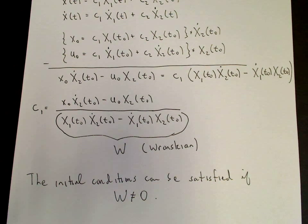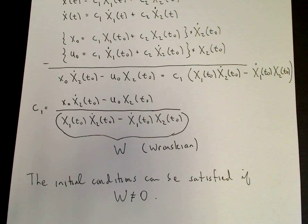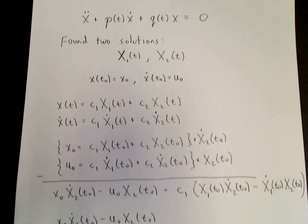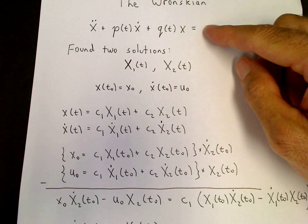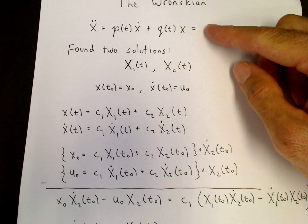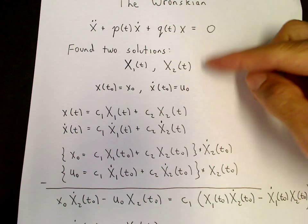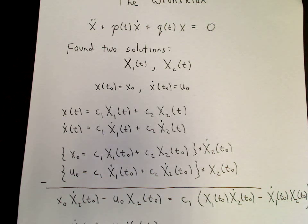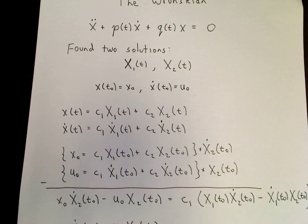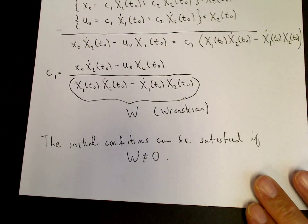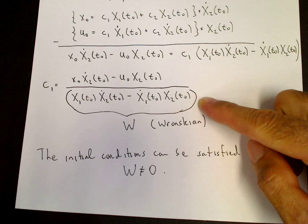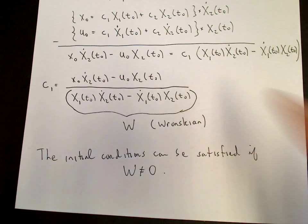For those of you who don't yet know linear algebra, then it's sufficient to know that if you find two solutions, x1 and x2, of a second-order linear differential equation, you're able to find the general solution of that differential equation by a linear combination of x1 and x2 provided the Wronskian at the initial condition formed from x1, x1 dot, x2, and x2 dot is not equal to 0.